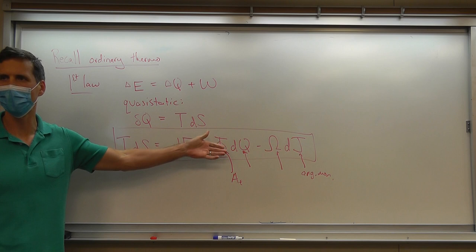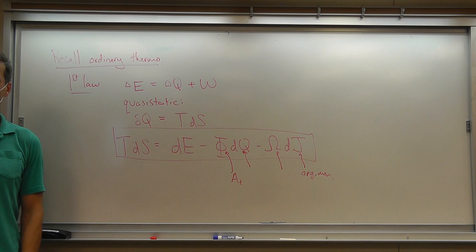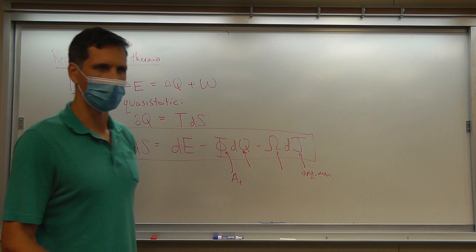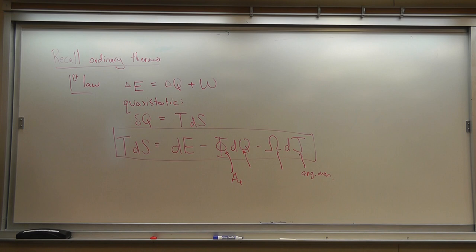Omega here is the angular potential, which you can think of as defined as the coefficient of angular momentum in this relation. For each conserved charge, if there are more conserved charges, we can put more terms here. Often you'll see a P dV term as part of the work term, like if you're studying heat engines. But we don't change the volume usually when we're talking about black holes, so we don't talk about that term.